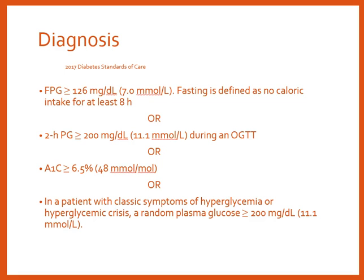If our bodies are functioning normally, they should be able to clear that glucose load below 200 mg/dL within two hours. The third diagnostic method is A1C — hemoglobin A1C or glycated hemoglobin — which looks at sugar attached to hemoglobin, giving a picture of blood sugar levels over the past three months. An A1C above 6.5% can diagnose diabetes. This is a critical lab value — used not only for diagnosis but for ongoing monitoring — providing a longer-term picture than a single blood glucose level.